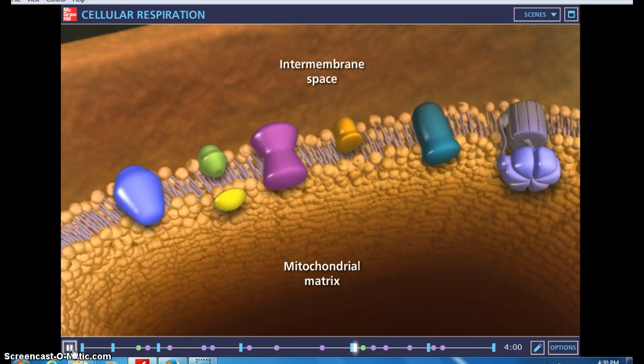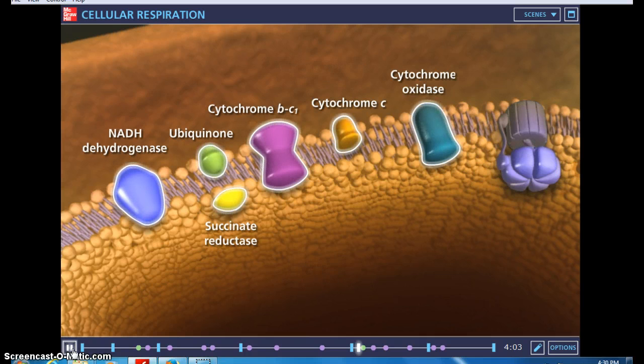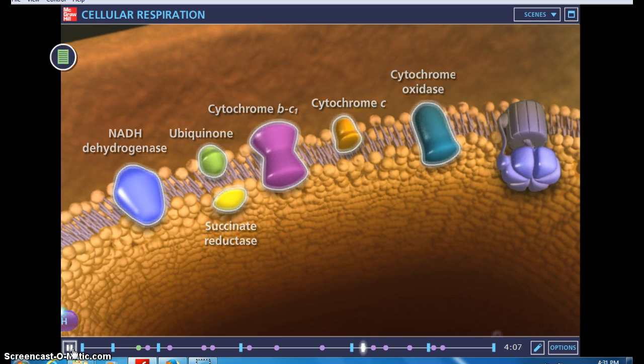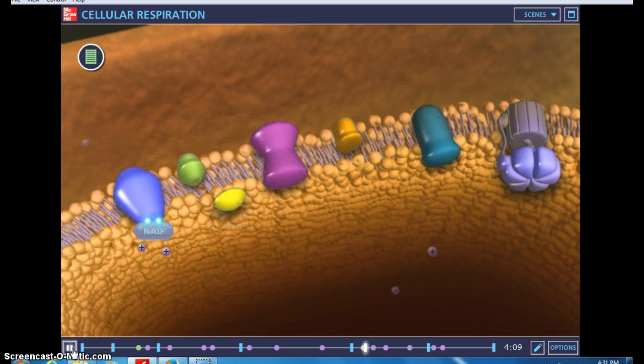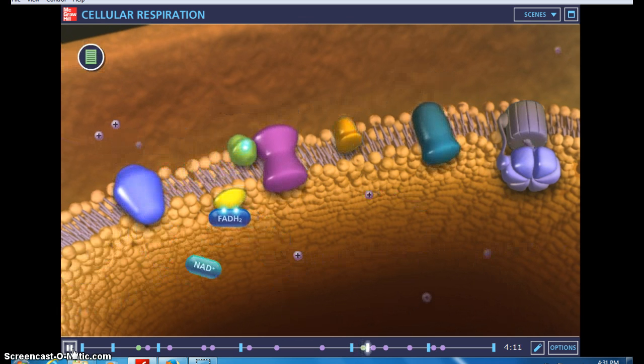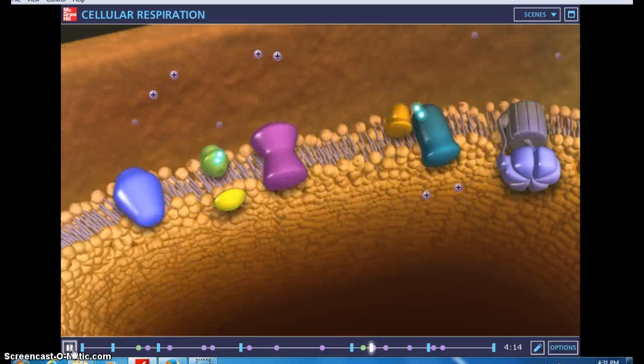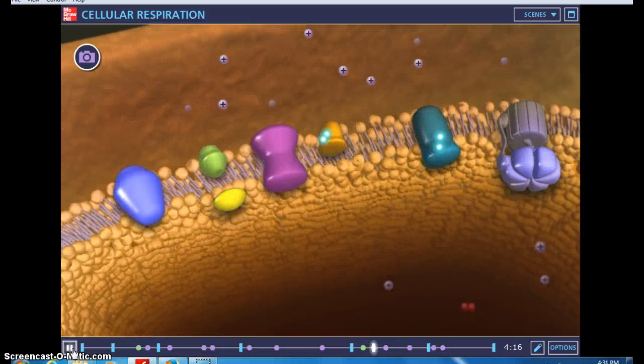The electron transport chain is a series of membrane-bound carriers in the mitochondria that pass electrons from one to another. As the electrons are transferred between the membrane proteins, the cell is able to capture energy and use it to produce ATP molecules.